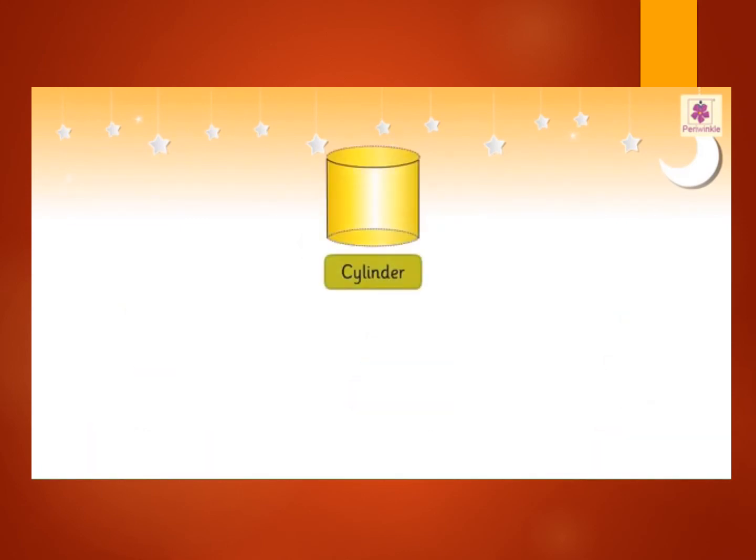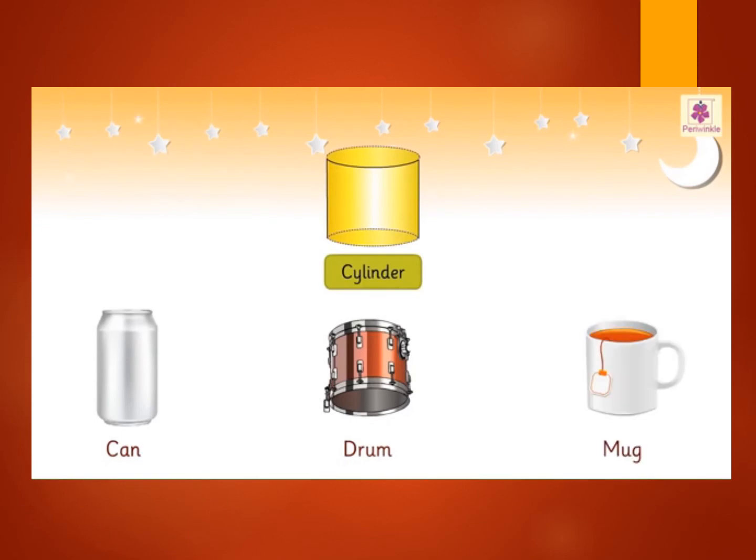This is a cylinder. A can, a drum, a mug are all examples of a cylinder.